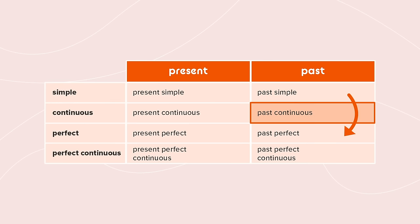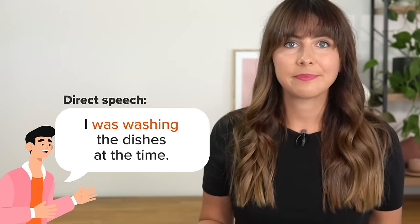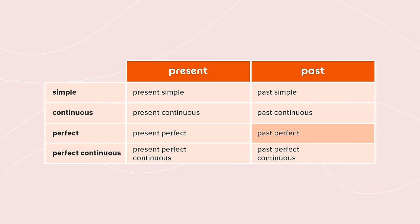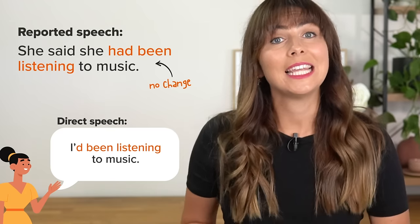"I was washing the dishes at the time" becomes "He said that he had been washing the dishes at that time." And last but not least, the past perfect and the past perfect continuous — they just stay the same. We can't shift them back by one degree because there are no more tenses to go to. So they stay the same — no change. "I've been listening to music" — she said she had been listening to music.